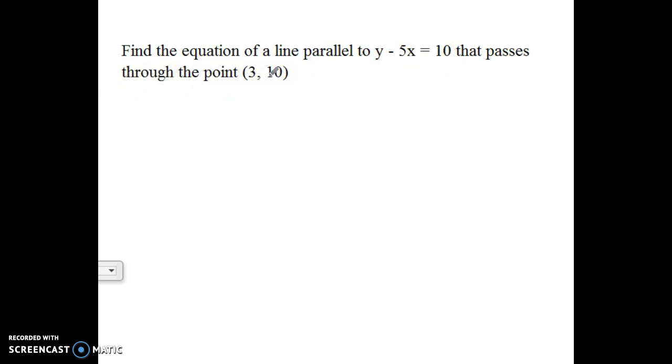First of all, one of the most common mistakes I saw was that students looked at this and they said, oh, my slope is negative 5. That is not true. The slope is not negative 5 because this isn't in slope intercept form yet.